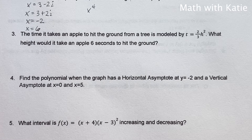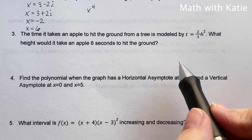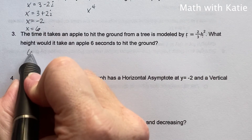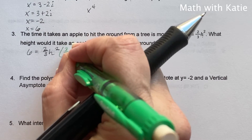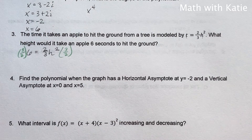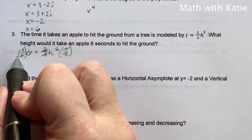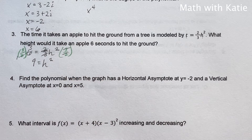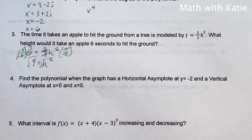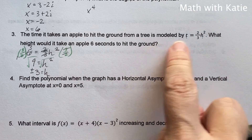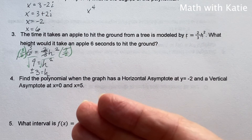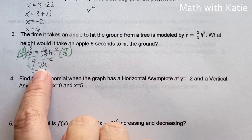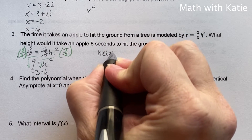The time it takes an apple to hit the ground from a tree is modeled by this equation. What height would it take an apple 6 seconds to hit the ground? This is time, this is height. So 6 equals two-thirds h squared. To solve for h, multiply both sides by 3 halves — that cancels. So 9 equals h squared. Square root both sides: plus or minus 3 equals h. Since we're dealing with height and time, we're not going to have negative values, so our height is 3.